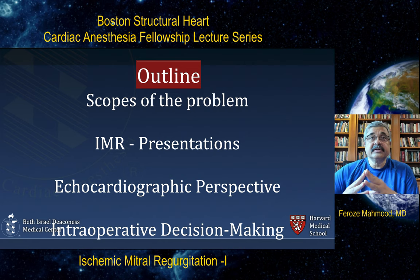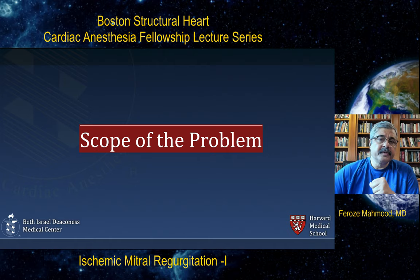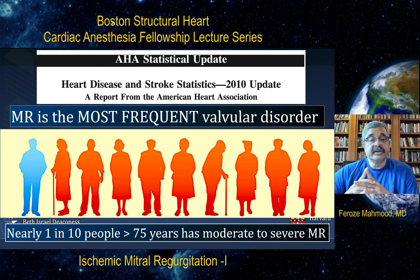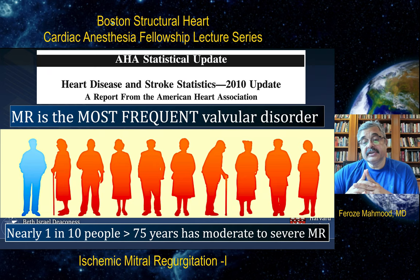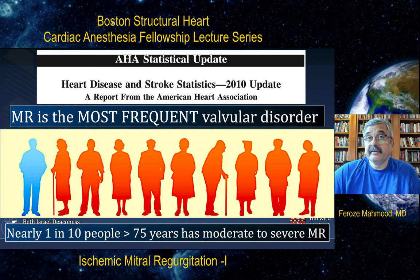Now let's go over the scope of the problem. According to the American Heart Association statistical update from 2010, mitral regurgitation is the most frequent valvular disorder in patients over 70 years of age. Nearly 1 in 10 patients more than 75 years of age has moderate to severe mitral regurgitation — that's almost 10% of patients.